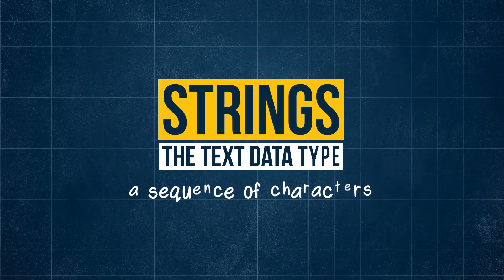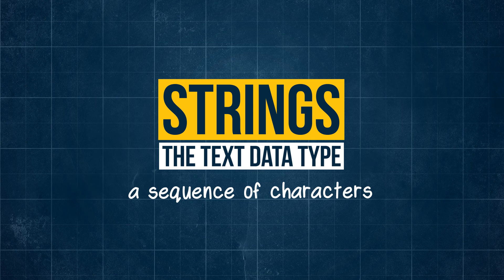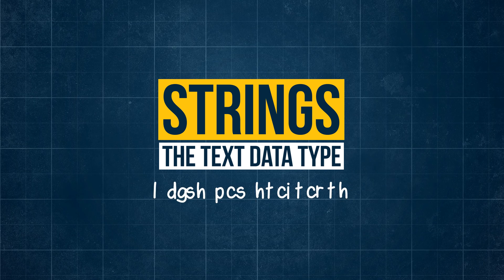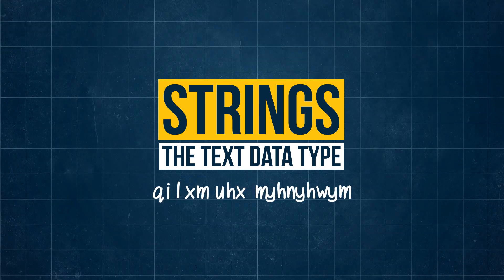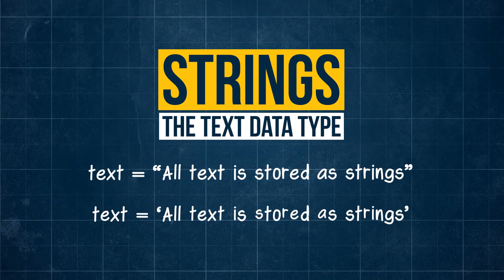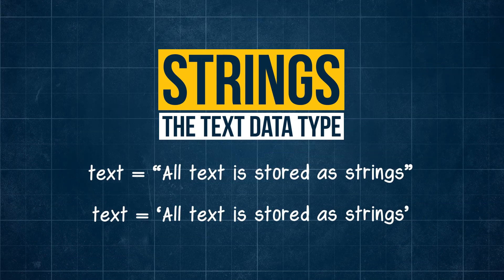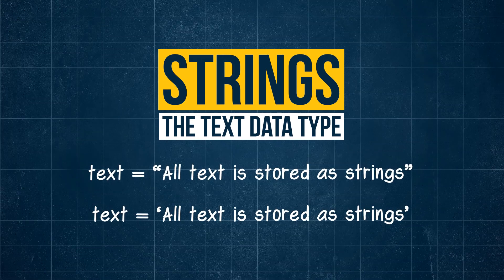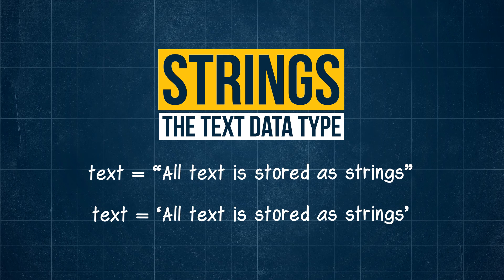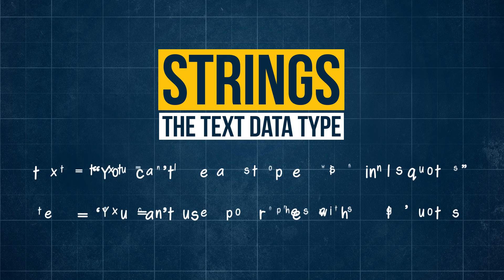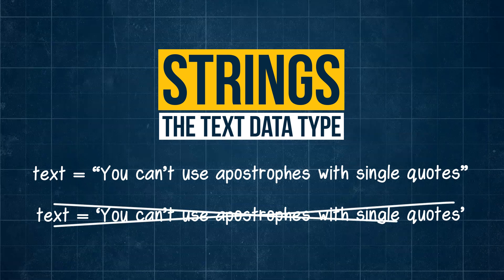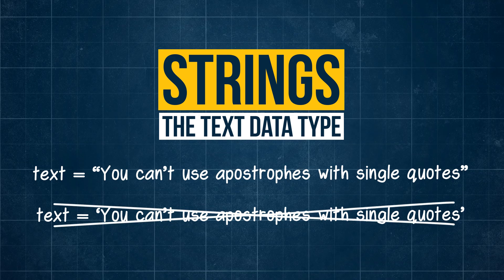Starting off we have Strings. Strings are a sequence of characters — it could be gibberish, or more commonly, words and sentences. All text is stored as strings, and we define a string by surrounding it with either single or double quotes. Double quotes are more common for strings, as you never know when you'll use an apostrophe.